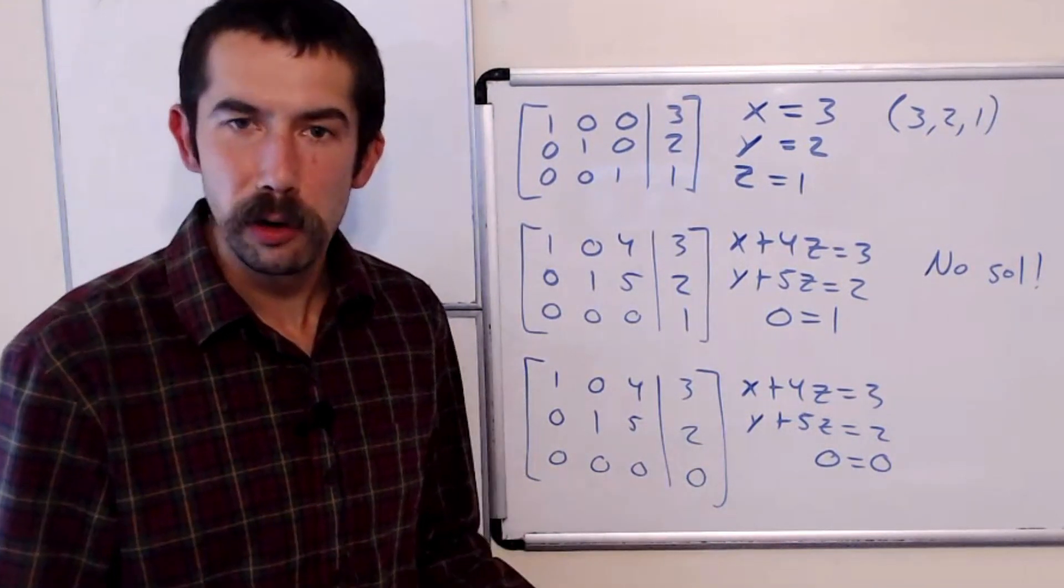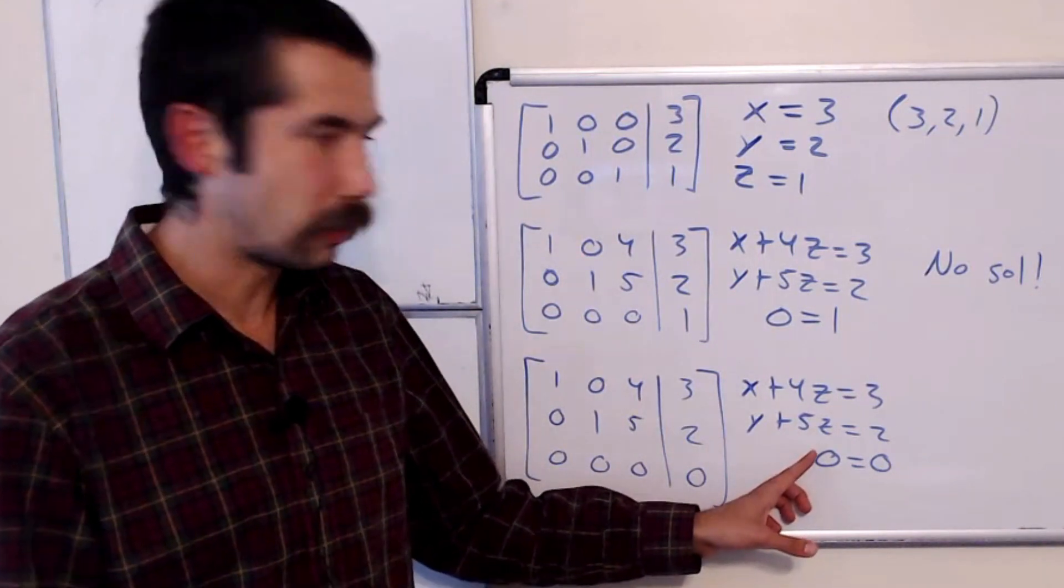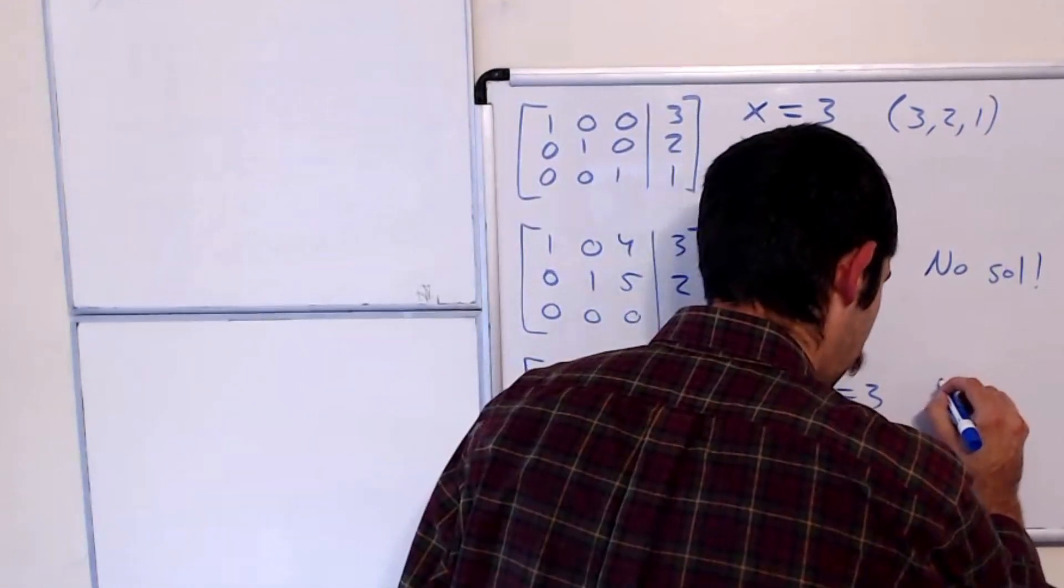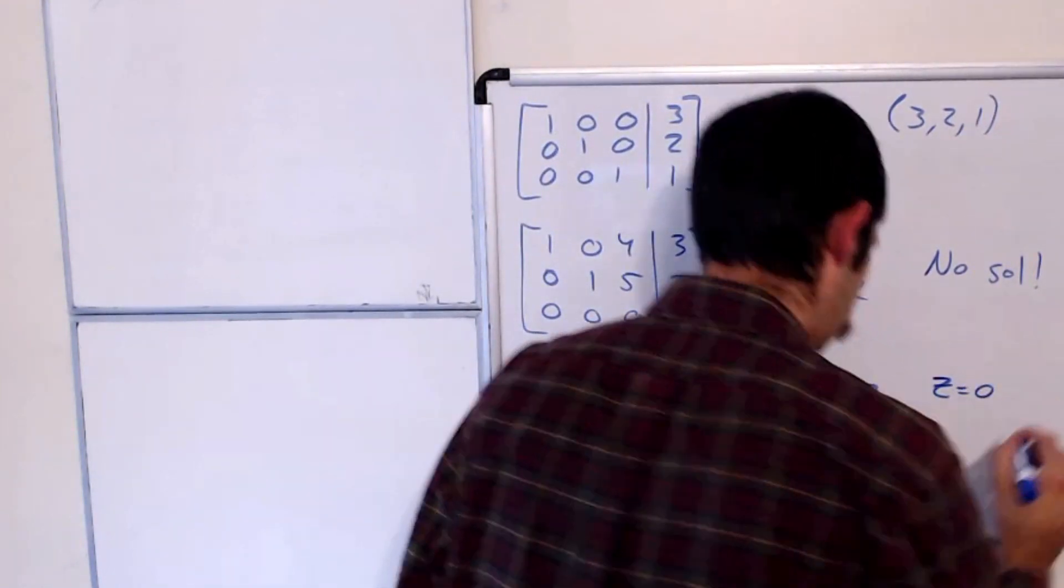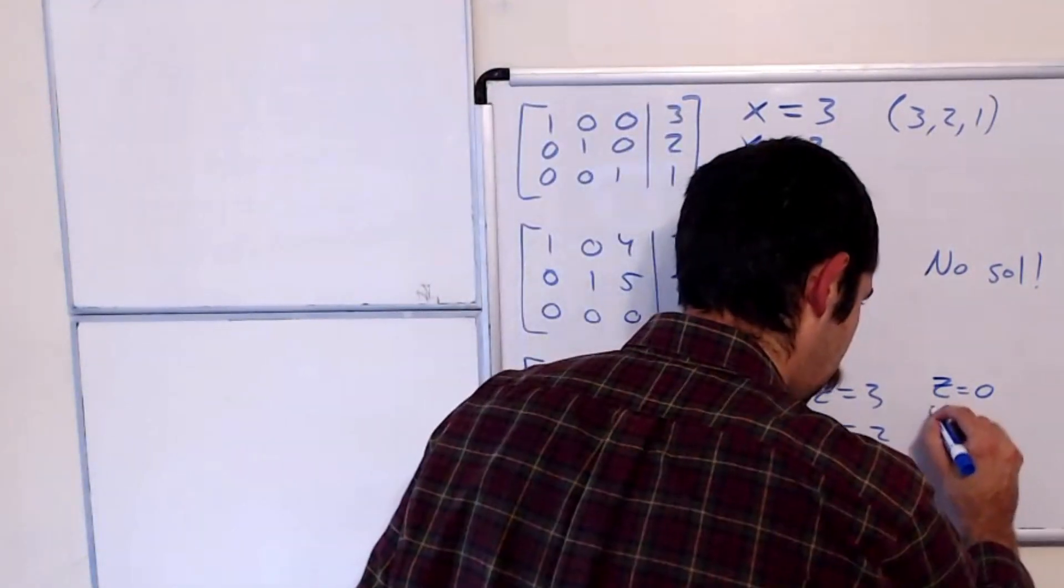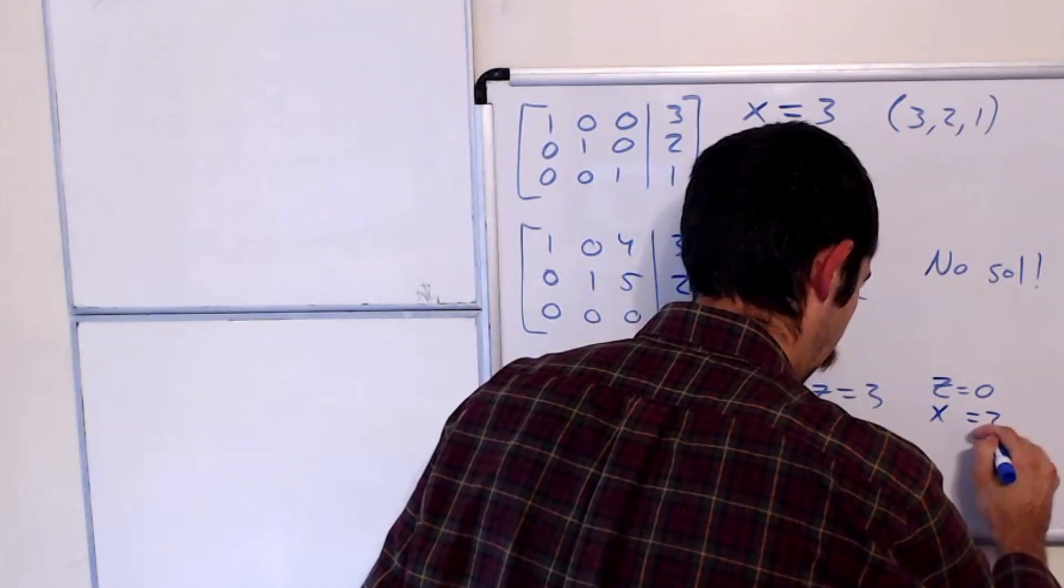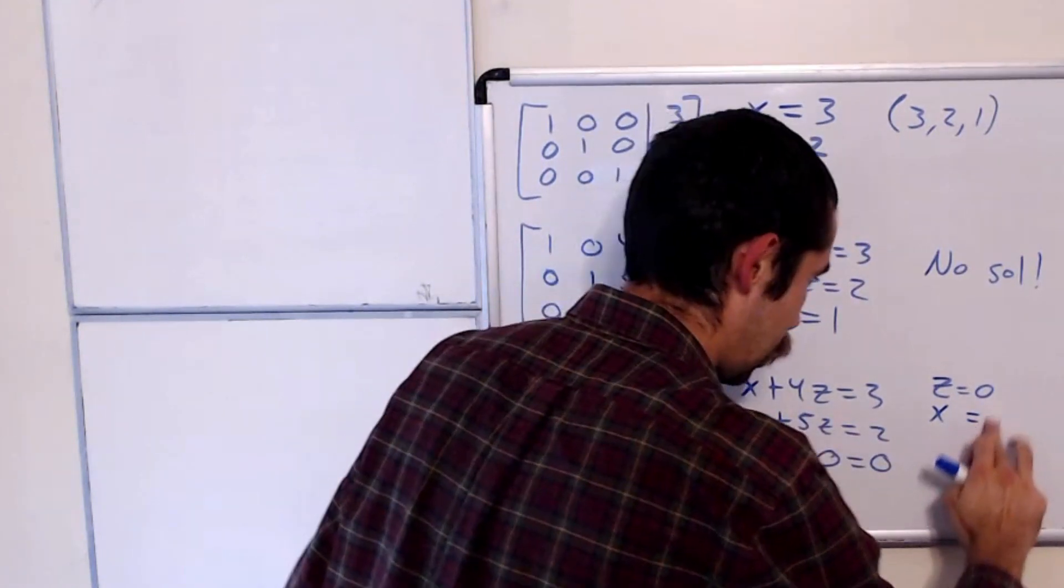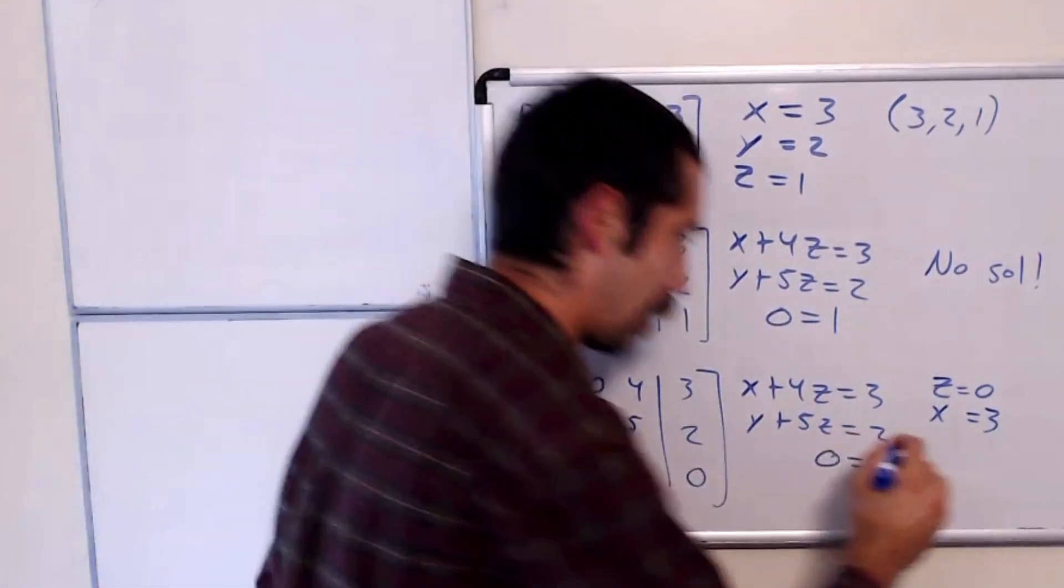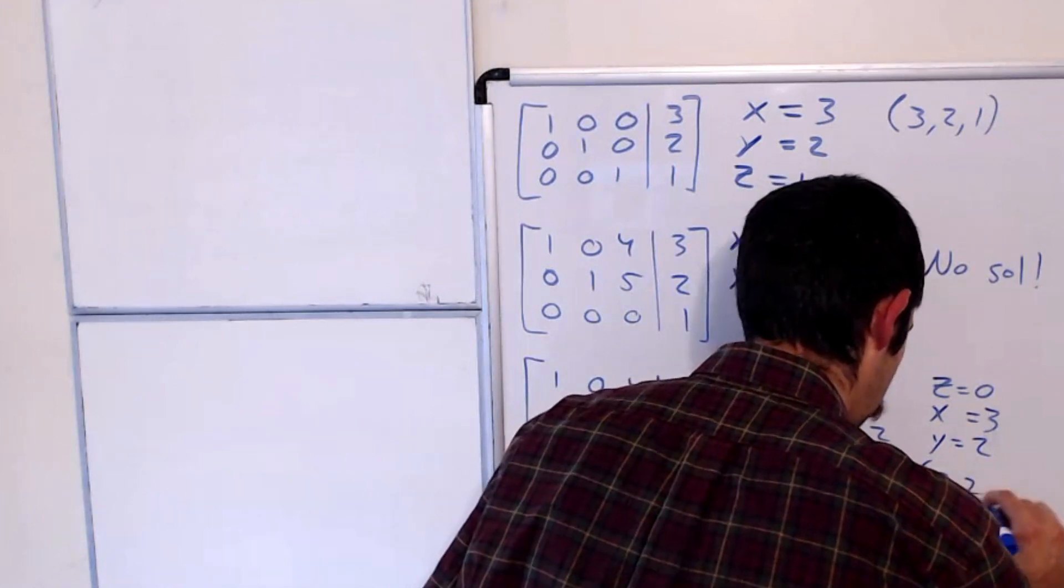And if you were asked to find a few of them, you could just plug in your favorite values for z and solve for x and y. So for instance, let's try z equals 0. Well, that would give us x plus 0 equals 3, so x equals 3. And y plus 0 is equal to 2, so y equals 2. So that's the point 3, 2, 0.